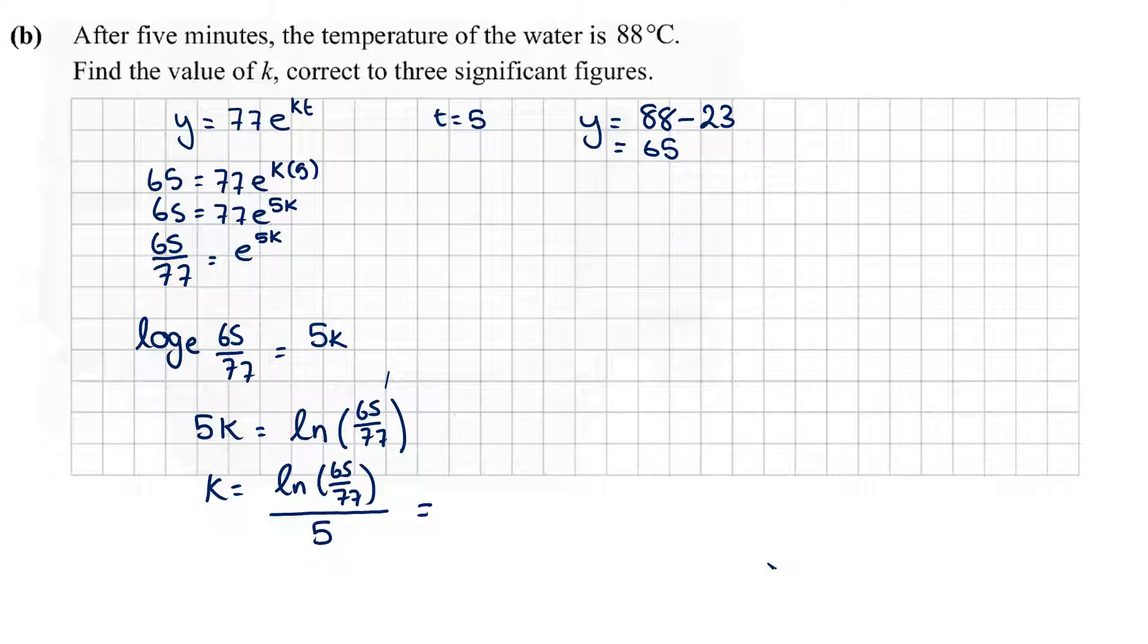When you put that into the calculator as is, we should get minus 0.03388. It asks us to round to three significant figures, which brings us to minus 0.0339. Significant figures is not the same as decimal points. Significant figures means non-zero numbers. If a zero appears before or at the end, they're not counted as significant. However, if a zero appears in between two numbers, then it is considered significant. So k equals minus 0.0339 correct to three significant figures.